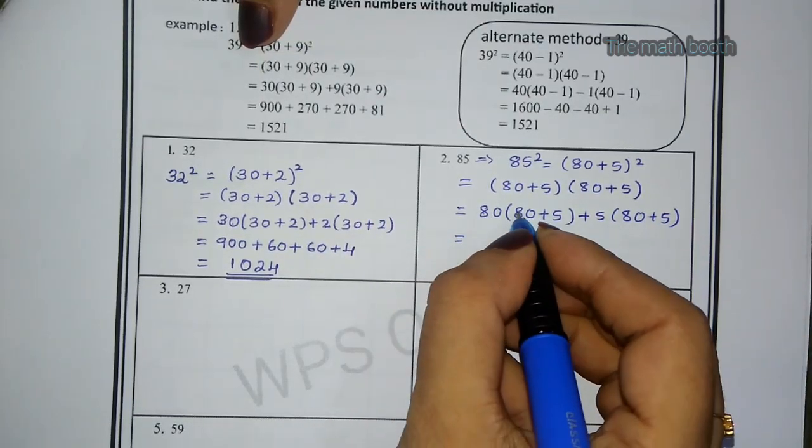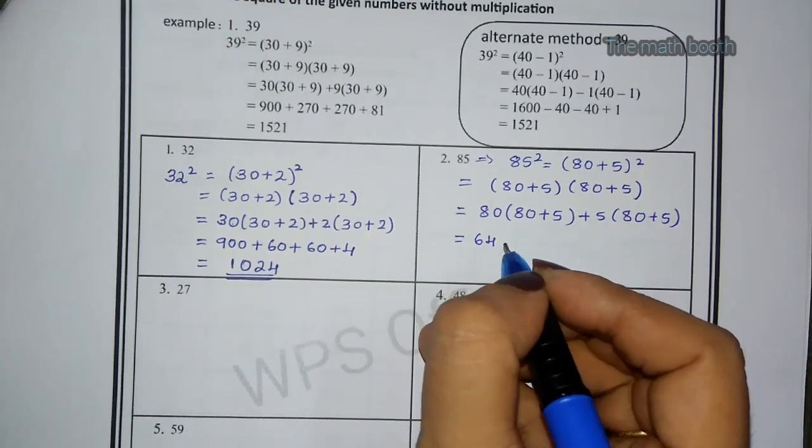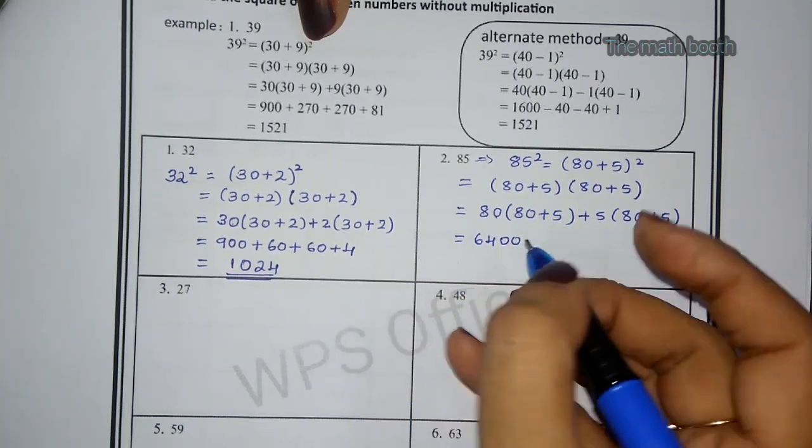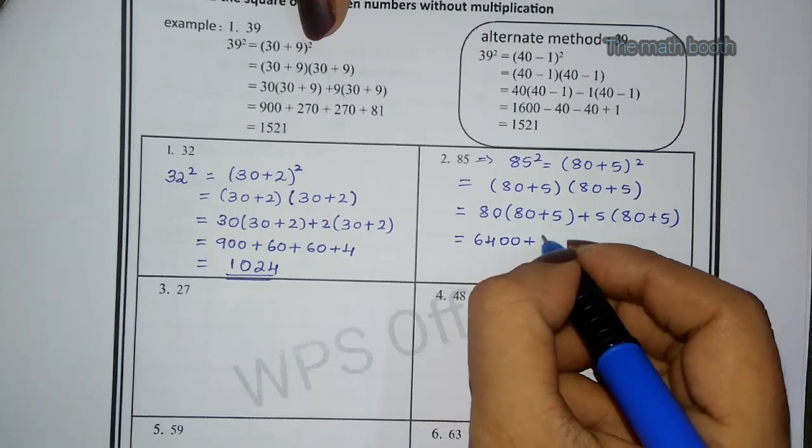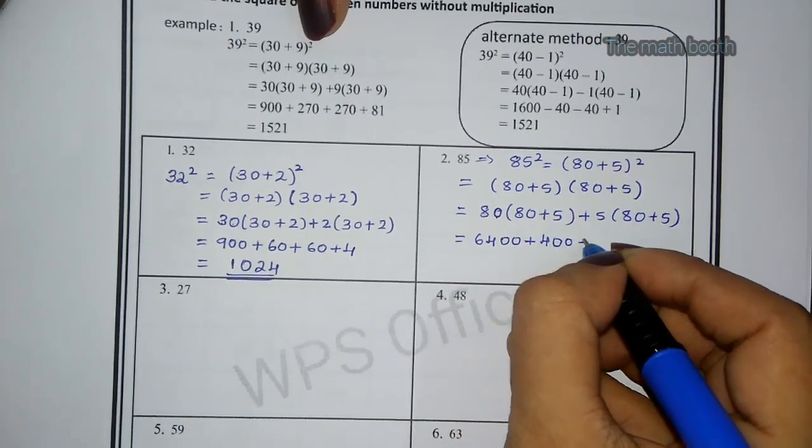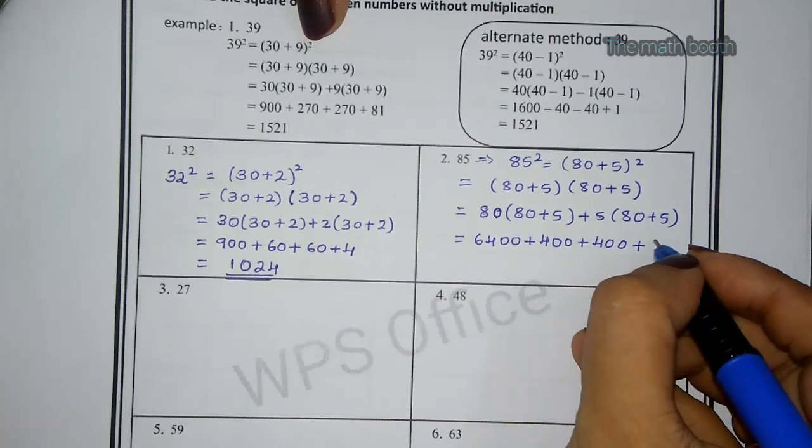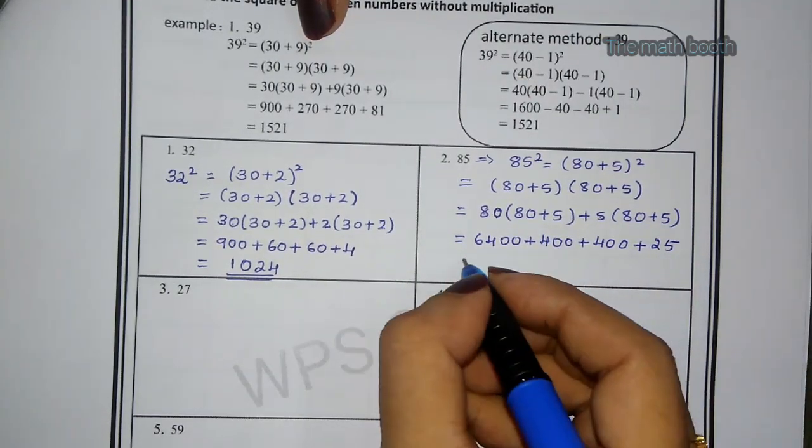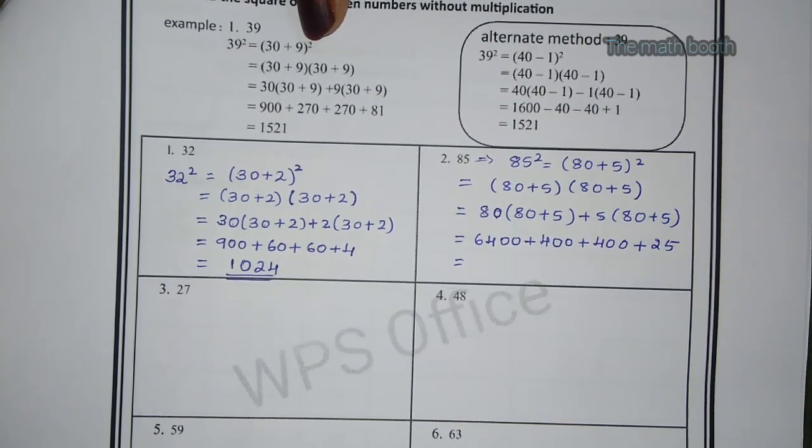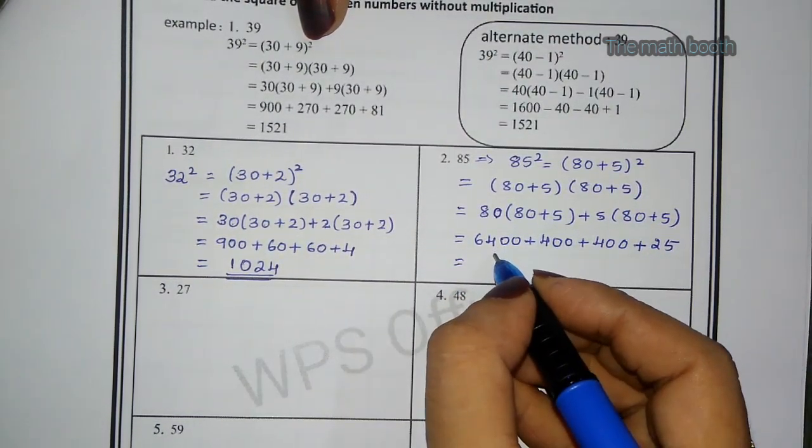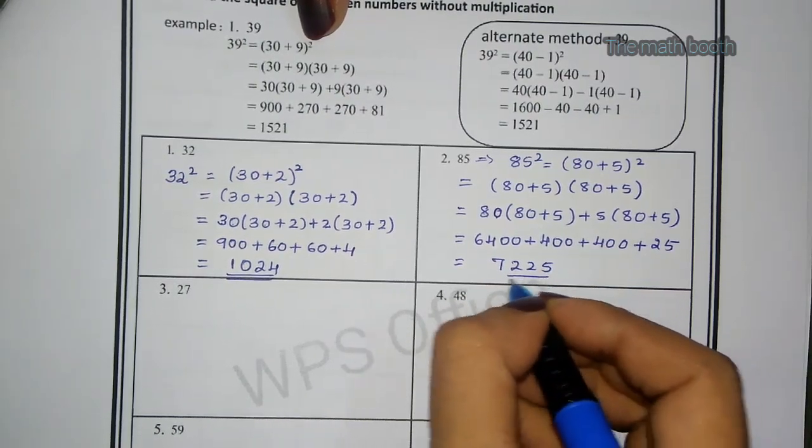So what we will do? 8 into 8 is 64, zero into zero, we have to write two zeros. Plus 8 times 5 is 40, one zero as it is. Plus 5 times 8 is 40, one zero as it is. Plus 5 times 5 is 25. Now let us add all the numbers. 6400 + 400 + 2 times 400 + 25 we have to do. If we add all this number, what we get? 7225. So this is the answer.